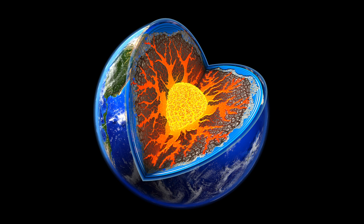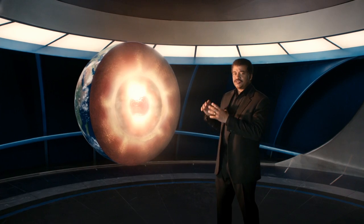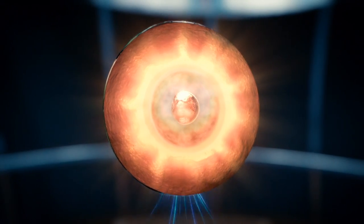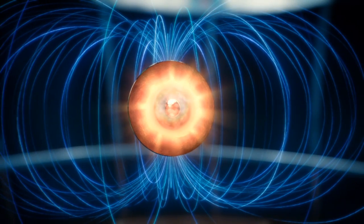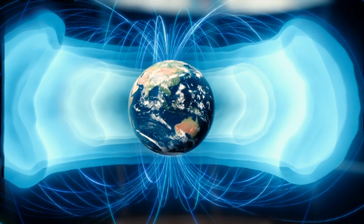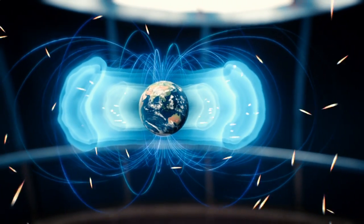Thorium and uranium sank to the center of the world and heated our planet. Liquid iron circulating around the solid part of the core as Earth rotates acts like a wire carrying an electric current. Electric currents produce magnetic fields, and that's a good thing. Our magnetic field protects us from the onslaught of cosmic rays.